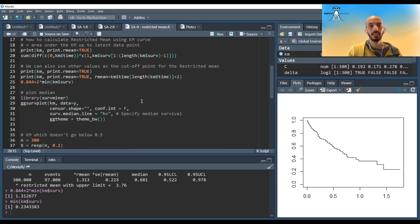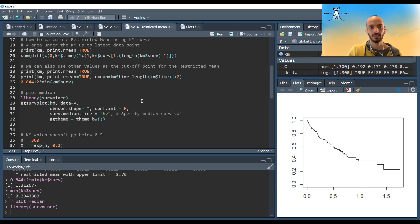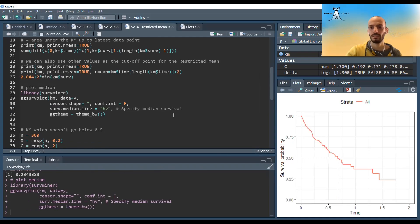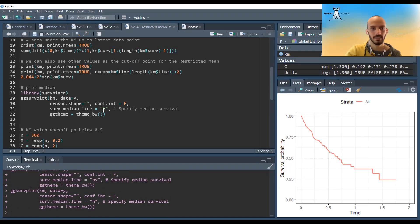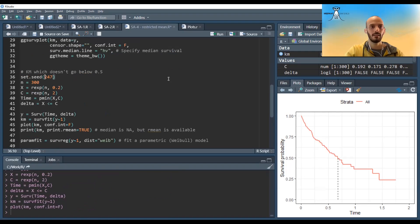Now, if I want to plot the median, there's actually a better way to do this using the library survminer. If I plot this now with this ggsurvplot and I just say surv.median.line and I say both horizontal and vertical, then it plots it like this and it's very visible where the median is. And if I do it just horizontal, it's just like this. If I do it just vertical.